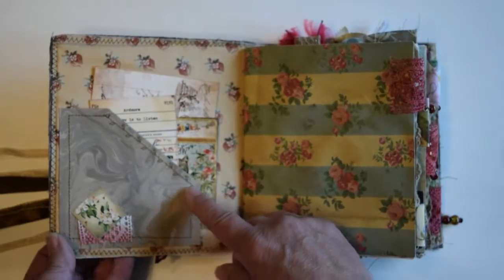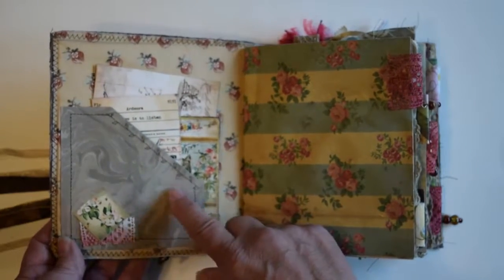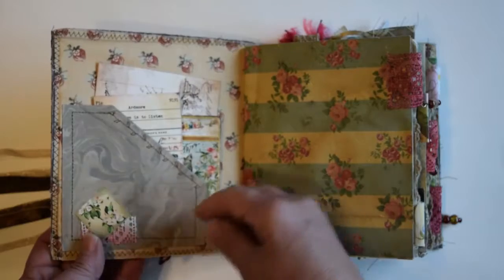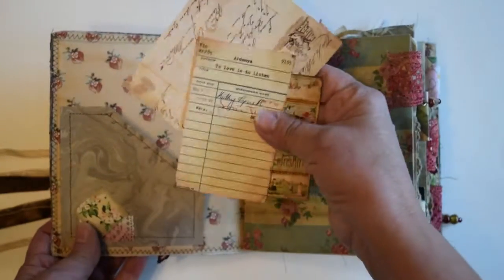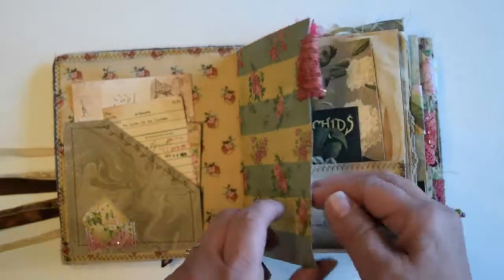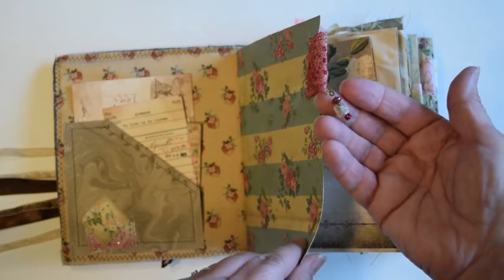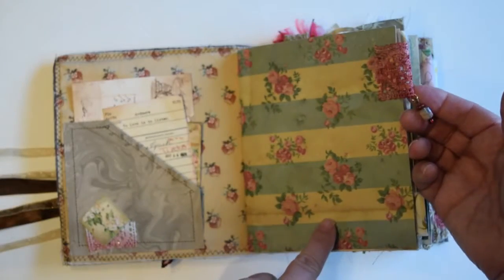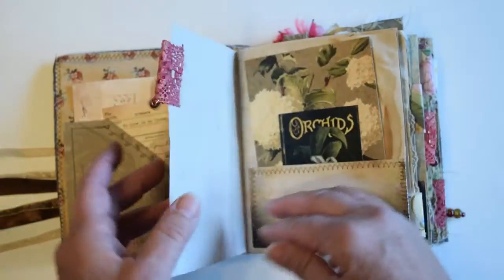Here's a pocket made out of hand marbled paper, which I marbled myself. There's a little collage here with lace and paper. There's some ephemera in the pocket. And there are a couple of bead charms that dangle from the sides here. So there's one of them.